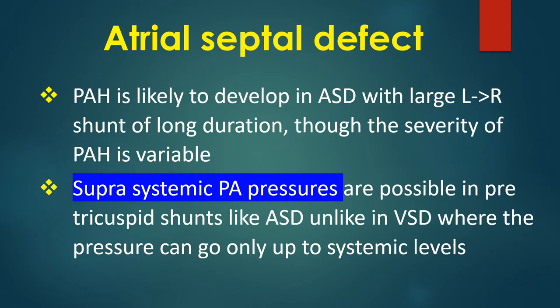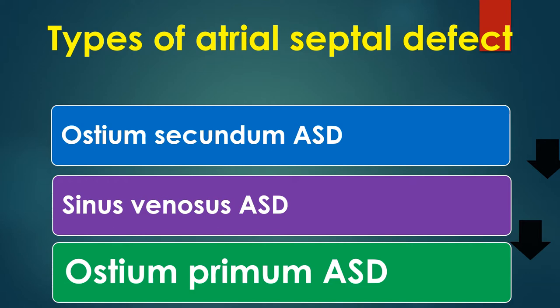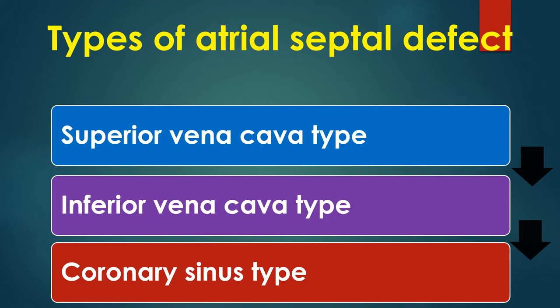In VSD, pressure in both ventricles equalizes when the defect is unrestricted. Usual types of ASD are the commonest ostium secundum ASD and the less common ostium primum ASD and sinus venosus ASD. Sinus venosus ASD can be subdivided into superior vena cava type and inferior vena cava type. The superior vena cava type is associated with partial anomalous pulmonary venous drainage of right-sided pulmonary veins to the junction of the superior vena cava and right atrium. Another rare type is the coronary sinus type of defect near the opening of the coronary sinus.